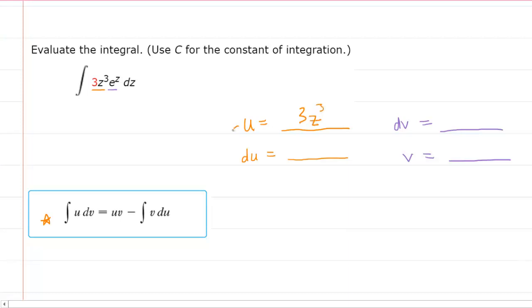And then we will differentiate. We will compute the derivative of 3z cubed, which as noted is 9z squared. And then we would have dz here notationally.